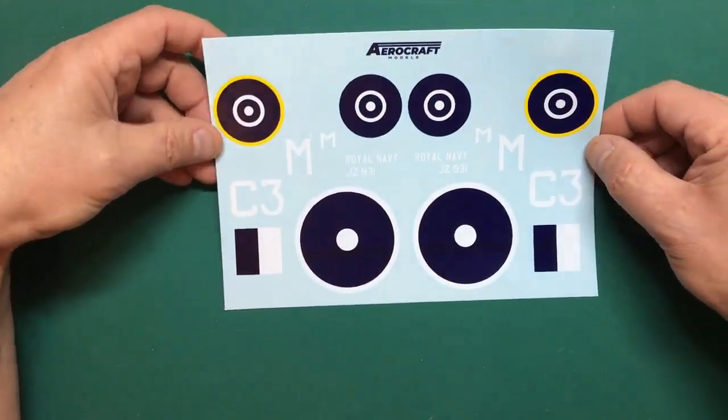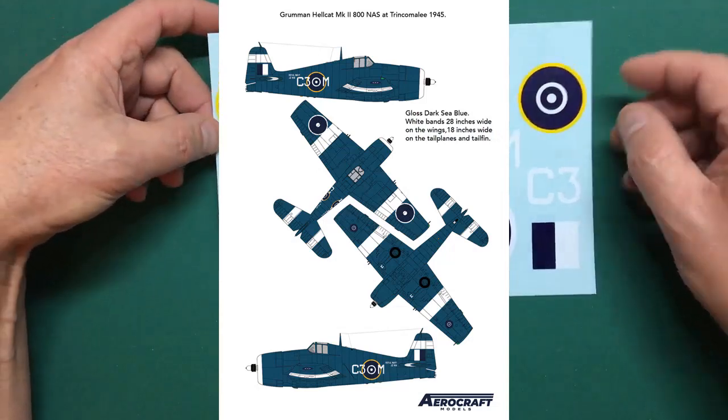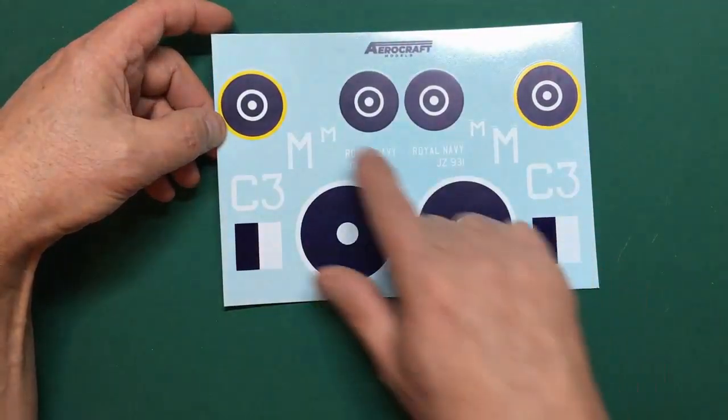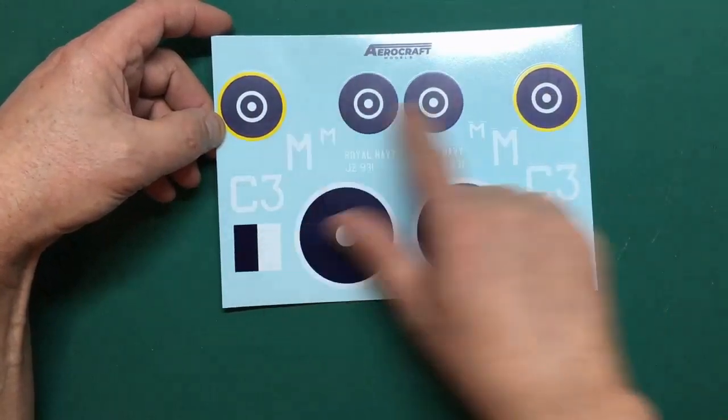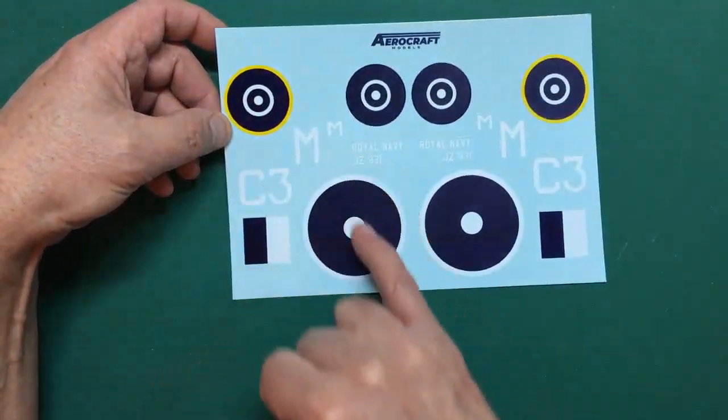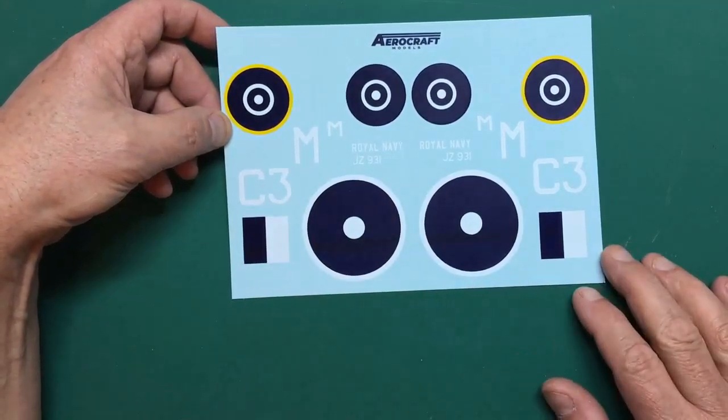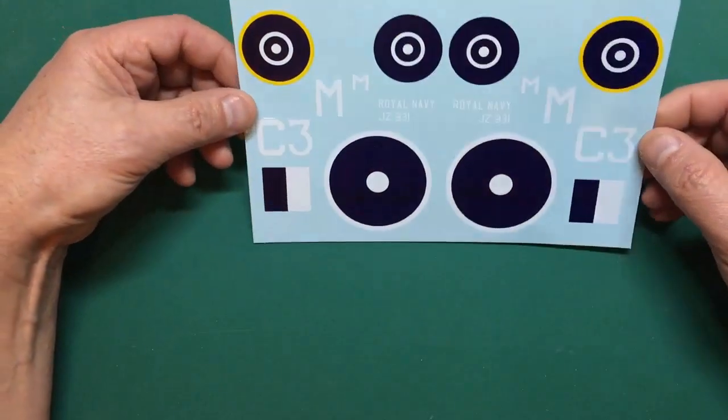Finally we've got this one here which is Royal Navy JZ-931. This one again is using the different style roundels and you've got totally different roundels for the fuselage there. We've got the C3 and the M markings and again tail flashes which are completely different from the Airfix kit. That one on its own is eight pounds.